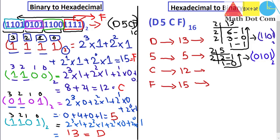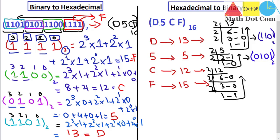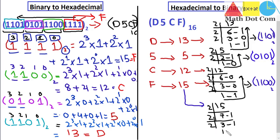For 12: 12 ÷ 2 = 6 remainder 0; 6 ÷ 2 = 3 remainder 0; 3 ÷ 2 = 1 remainder 1; 1 ÷ 2 = 0 remainder 1. The binary equivalent of 12 is 1100. For 15: 15 ÷ 2 = 7 remainder 1; 7 ÷ 2 = 3 remainder 1; 3 ÷ 2 = 1 remainder 1; 1 ÷ 2 = 0 remainder 1. The binary equivalent of 15 is 1111.